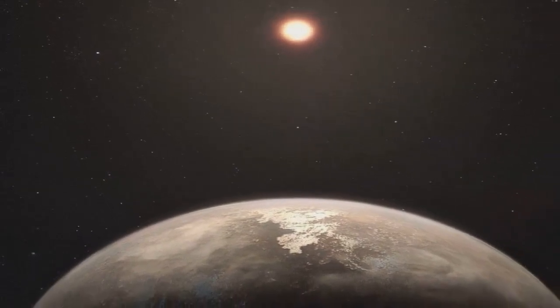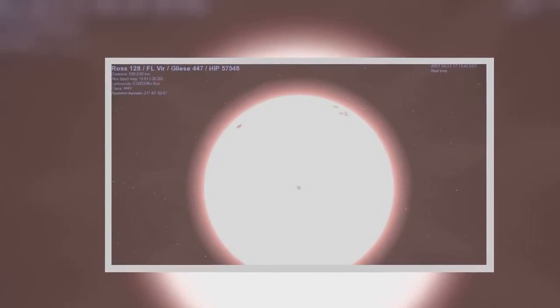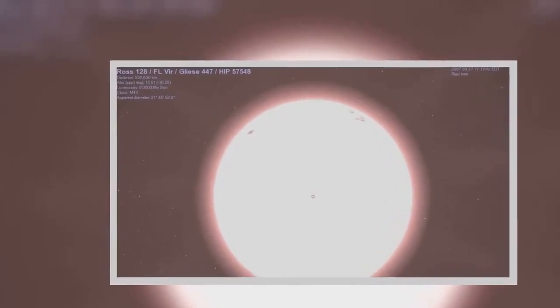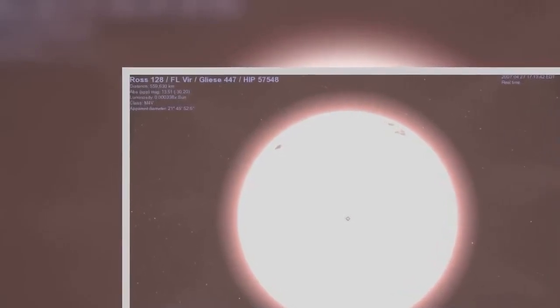Ross 128b orbits 20 times closer to its star than the Earth orbits the Sun. But because its parent star is much smaller and dimmer than our yellow Sun, it receives only a little more solar radiation than Earth.